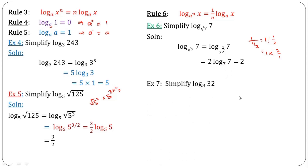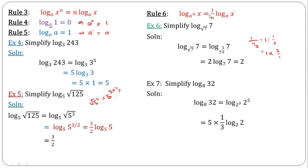The next example asks us to simplify log 32 over log 8 to base 2. We express both to base 2: 32 is 2 to the power of 5, and 8 is 2 to the power of 3. By the third rule, bringing 5 to the back gives 5. By the sixth rule, 3 coming to the back becomes 1 over 3. So we have 5 times 1 over 3, and log 2 base 2 is 1. This gives 5 over 3 times 1, which is 5 over 3.